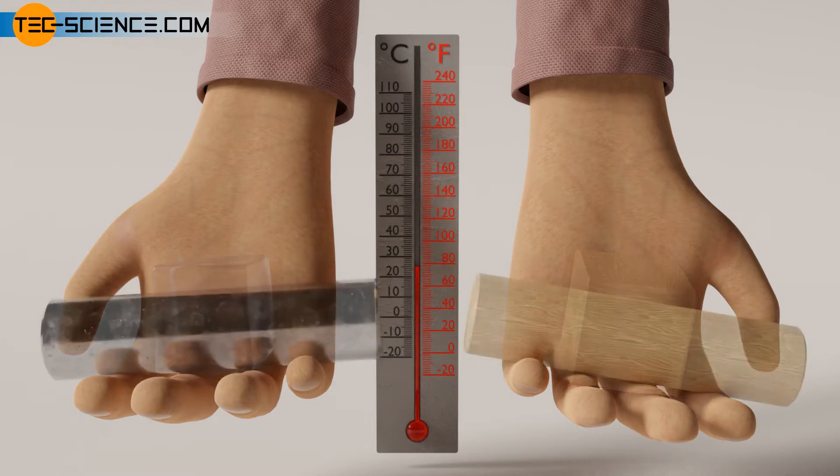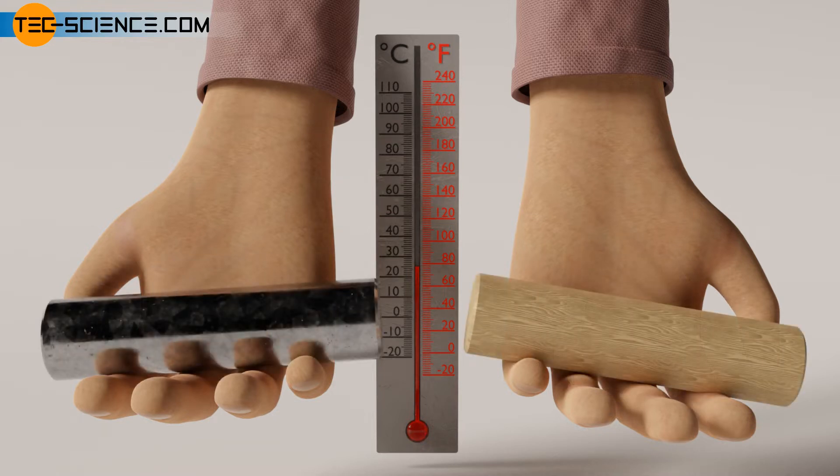For example, metal feels much cooler than wood at low temperatures due to its higher thermal conductivity, although both have the same temperature. On the other hand, the human perception of temperature depends on the prehistory of our skin with which we touch objects.